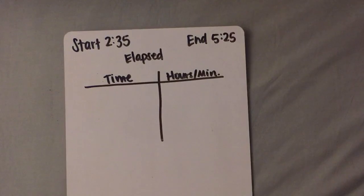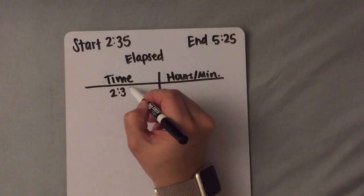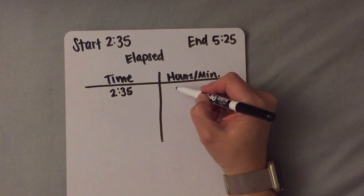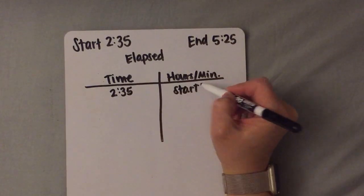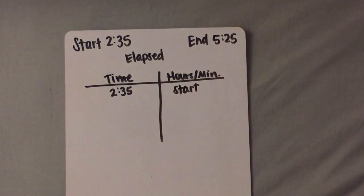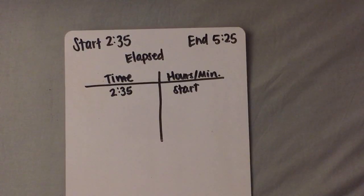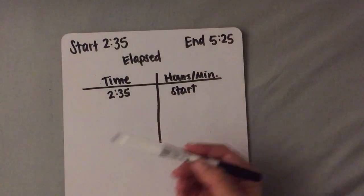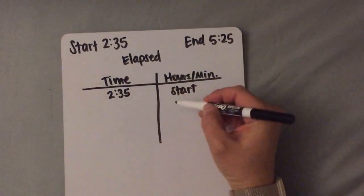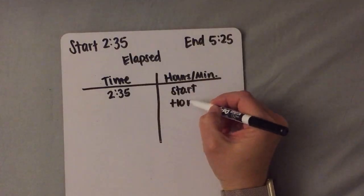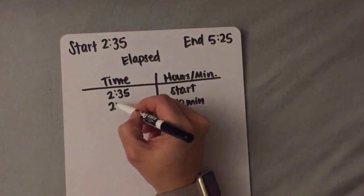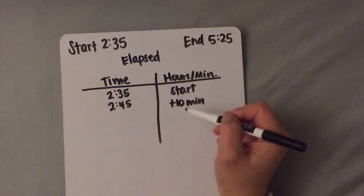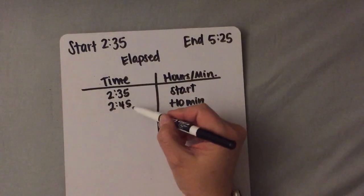Since I know my start time, I'm going to go ahead and write that — it's 2:35 — and right here next to it I'm going to write start, because that's my start time. Now it's pretty easy to count in fives, tens, fifteens, thirties, and by the hour. So I want to go ahead and bring 2:35 to 2:45, and I can do that by adding 10 minutes. 2:35 plus 10 minutes is 2:45.